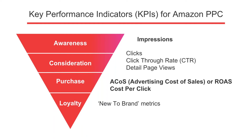At the consideration stage, shoppers are doing comparisons, reading reviews, and checking prices. At this stage, we want to be looking at the number of clicks — how many people out of those who saw the impressions actually ended up clicking on an ad. The click-through rate or CTR is basically the number of clicks divided by the number of impressions — a relative metric used to compare one campaign against another. And then detail page views — the total number of views your product page got that have been tied back to a customer actually seeing an advertisement.